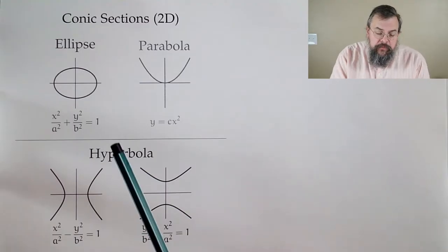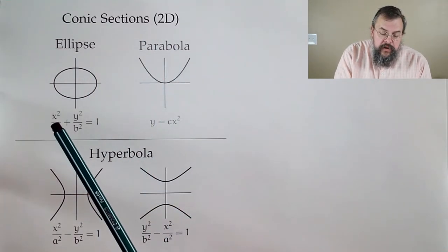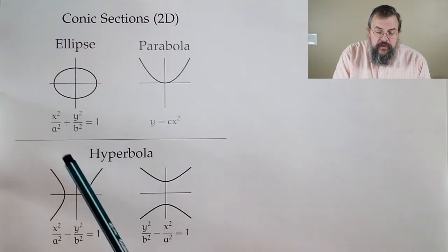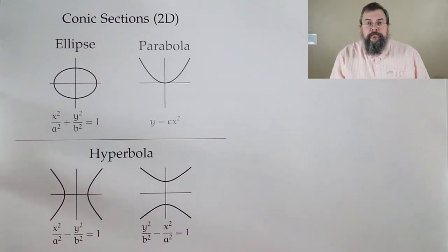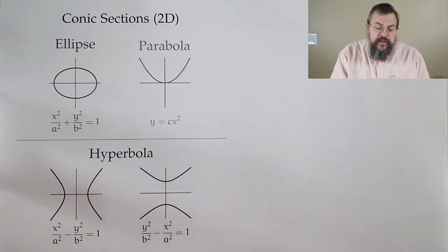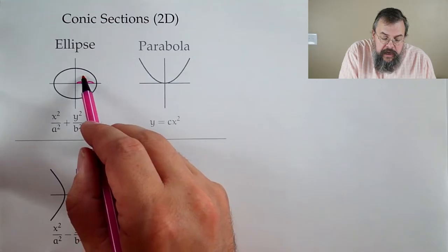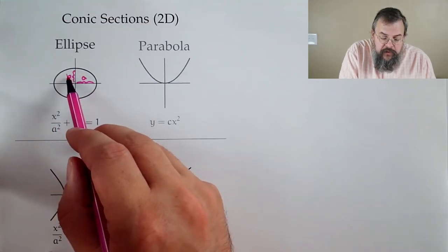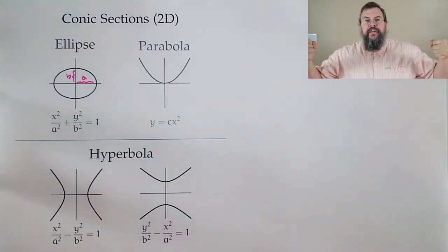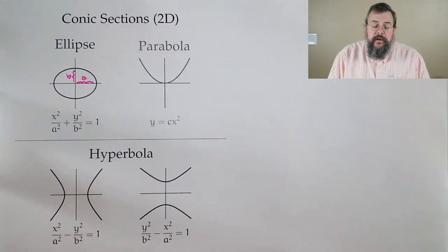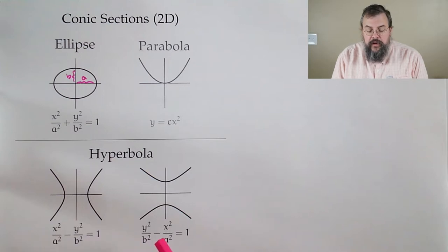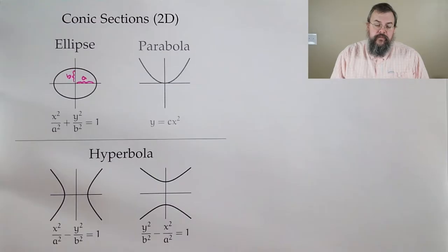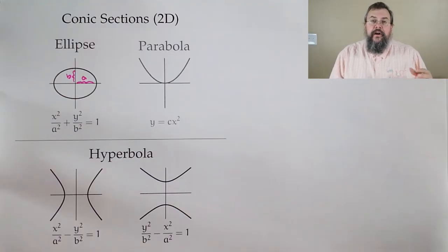We're going to start with the conic sections — what happens in 2D — and there are more or less three that we want to talk about. There's the ellipse, which is sort of like a circle but where you stretch it in one of the two directions: X squared over A squared plus Y squared over B squared equals 1. A is how far we stretch in one direction and B is how far we stretch in the other. There's also a parabola, Y equals a constant times X squared, and a hyperbola: X squared over A squared minus Y squared over B squared equals 1, or Y squared over B squared minus X squared over A squared equals 1. These are our conic sections — the curves that tend to happen whenever you have a degree 2 equation.